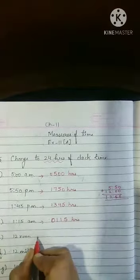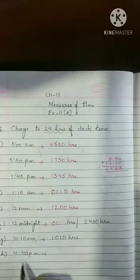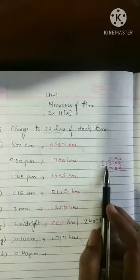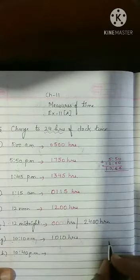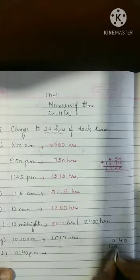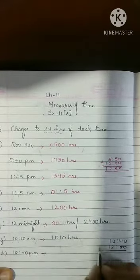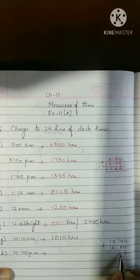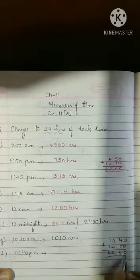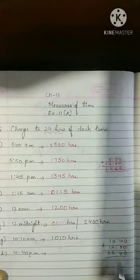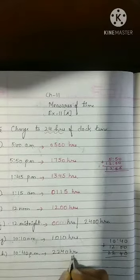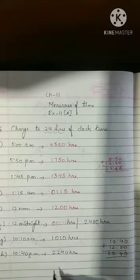Then 10:40 pm. So how do we change 10:40 pm? PM we have to change. How I taught you? By adding 12 in it. So 10:40 by adding 12 in it, we will change. 0 plus 0 is 0, 4 plus 0 is 4, 0 plus 2 is 2, 1 plus 1 is 2. So it is 22 hours 40 minutes. So 22:40 hours. Clear everyone? Hope it is clear to all.